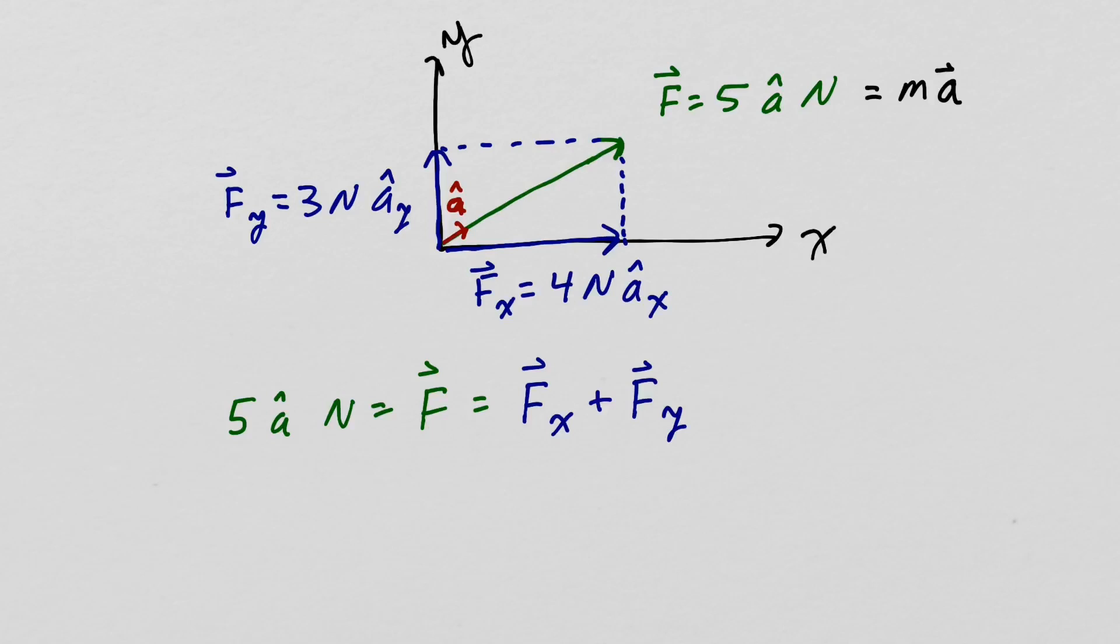This gives us a method of representing a vector by its components in the X and Y directions. Since the magnitude of F will be the length of this diagonal, we can use the Pythagorean theorem for this right triangle here, where the diagonal is the hypotenuse, F sub X is one side and F sub Y is the other side, to find F. So F is going to equal the square root of F sub X squared plus F sub Y squared.